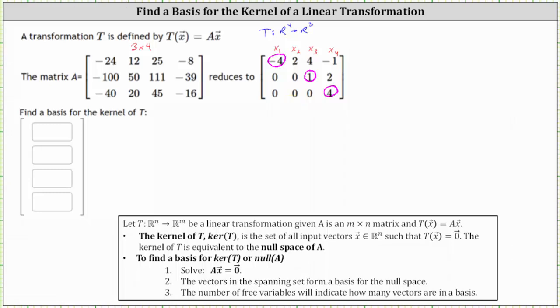And now let's write the corresponding equations for each row. And again, because we're looking for the kernel of the transformation, we will set each equation equal to zero.